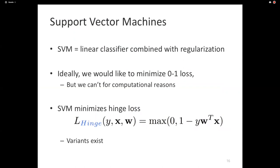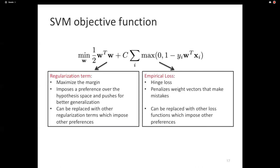I could have introduced the idea of support vector machines in a completely different way — the goal of learning is to minimize loss, I'd like to minimize the 0-1 loss but I don't know how, so I introduce an approximation called the hinge loss. That's another origin story for SVMs. With the SVM objective, when you plug all the pieces in, you get the regularizer plus the empirical loss. In the SVM, the empirical loss is the hinge loss, which penalizes weight vectors according to that particular function definition.